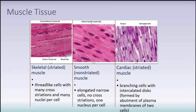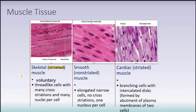On this slide you can see three different types of muscle tissue: skeletal muscle tissue, smooth muscle tissue, and cardiac muscle tissue. Starting with skeletal — skeletal muscle is also known as striated because it has alternating bands of thick and thin filaments, giving it a striped appearance. Skeletal muscle is considered voluntary because we have control over contraction and relaxation. We can decide to lift a weight and contract our muscles.